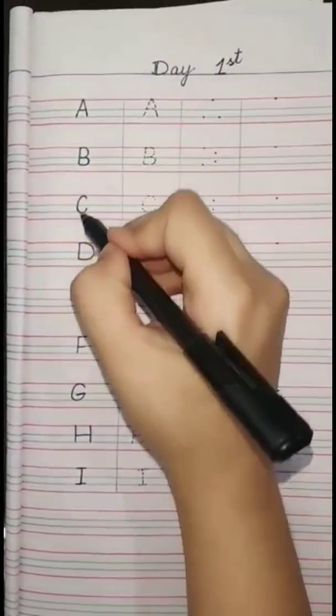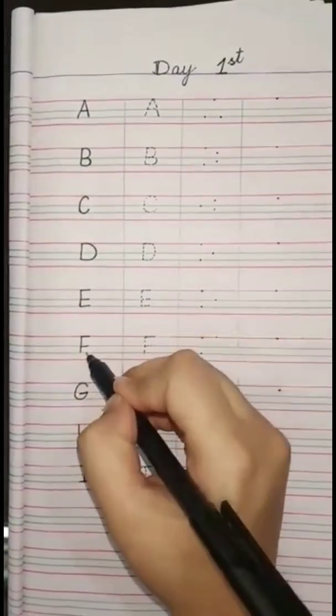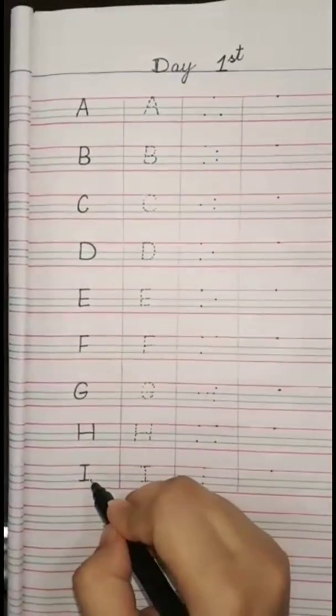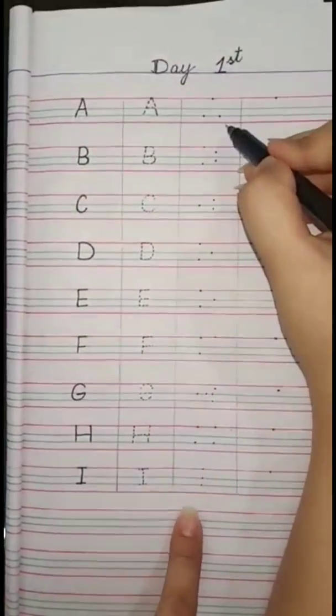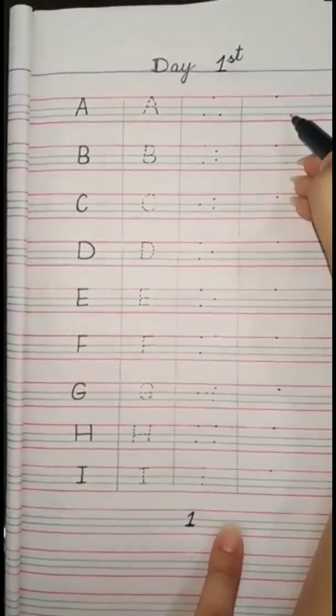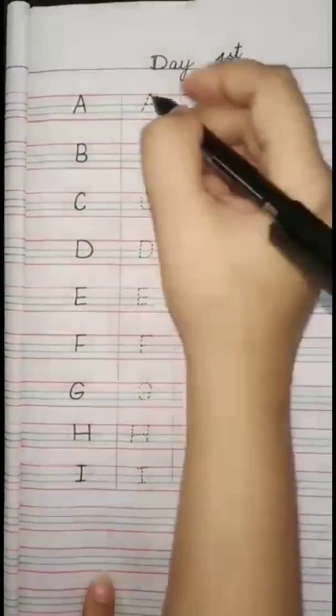The capital letters on this page are: A, B, C, D, E, F, G, H, I. The first step is tracing, the second step is three dots, and the third step is one dot. Now start with me.